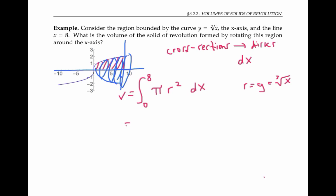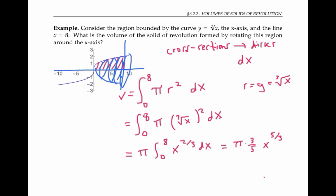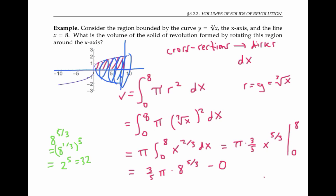So we can rewrite the volume as the integral from zero to eight of pi times the cube root of x, squared, dx. Pulling out the pi and rewriting using exponents, we integrate and evaluate using the bounds of integration to get three-fifths pi times eight to the five-thirds minus zero. Now eight to the five-thirds means eight to the one-third raised to the fifth power. Eight to the one-third is two, and two to the fifth is 32. So this expression simplifies to three-fifths pi times 32, or 96 fifths pi.